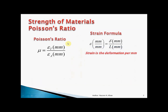Poisson's ratio is the ratio between transverse strain and actual strain — it's millimeter per millimeter, so it's a unitless number. The strain formula is also millimeter over millimeter; it's customary to write the units. Strain is the total deformation of the sample divided by the total length, giving deformation per millimeter of the sample.